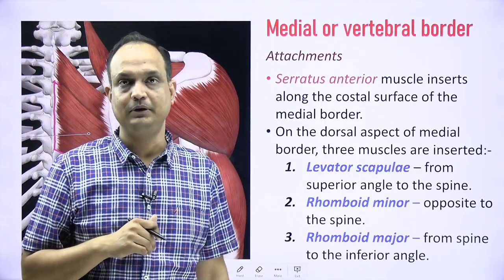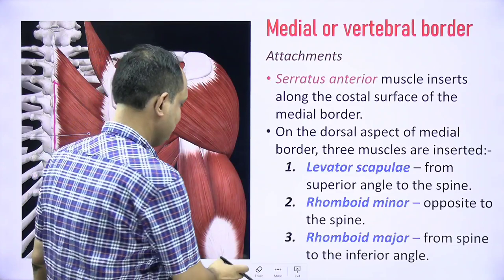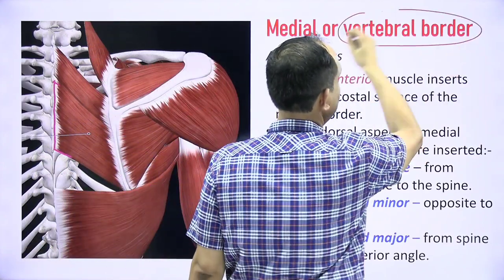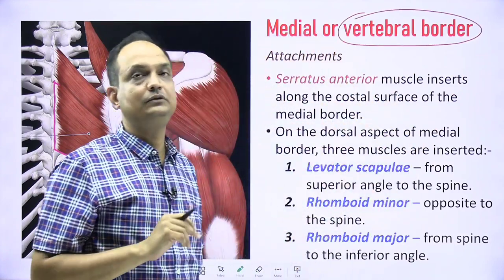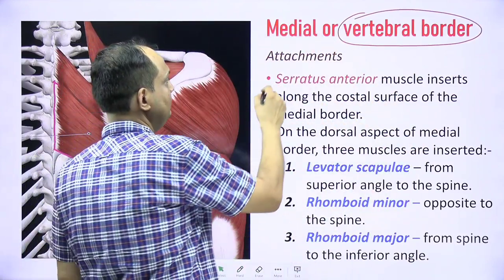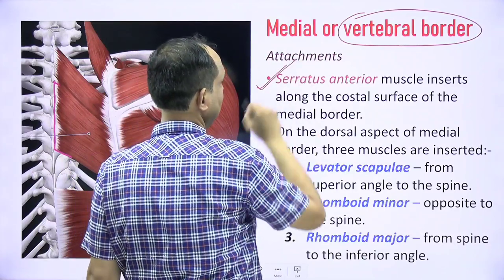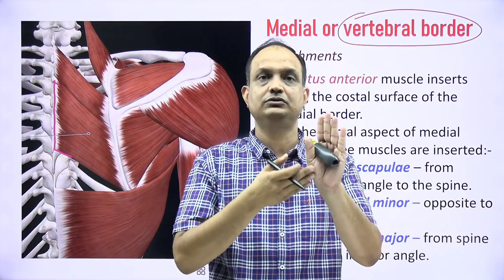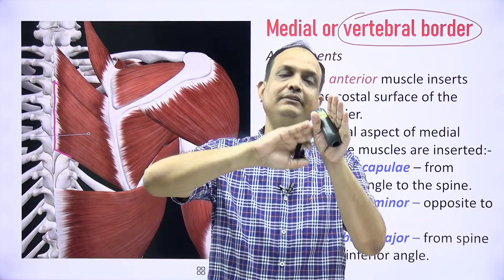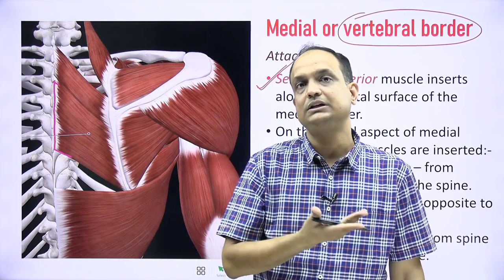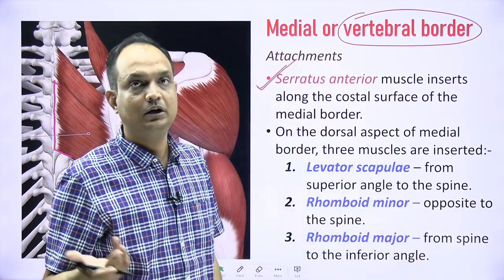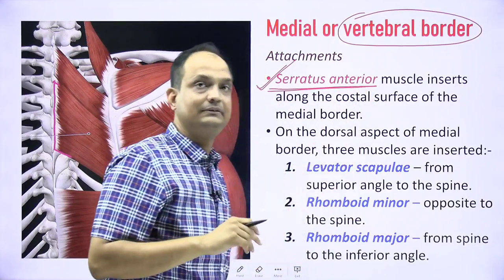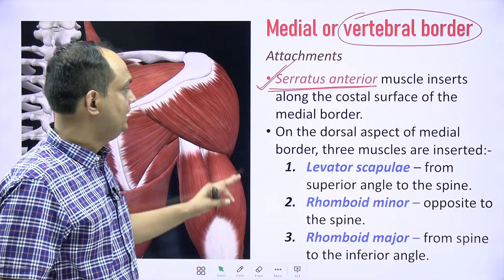First is the medial border of the scapula, also known as the vertebral border because it faces towards the vertebral column. The medial border has two aspects: the costal surface side and the dorsal surface side. On the costal aspect of the medial border, you have the attachment of serratus anterior.